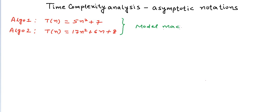A model machine has some basic operations, and each basic operation — like arithmetical, logical, or assignment operations — costs us one unit of time. Now these functions correspond to the model machine, but we want some representation which is true irrespective of the machine and still gives us the idea about the rate of growth of time.